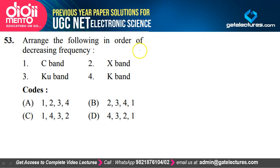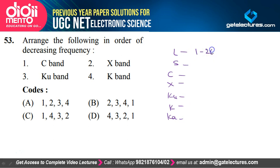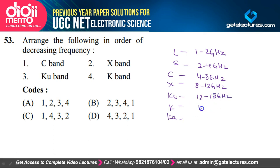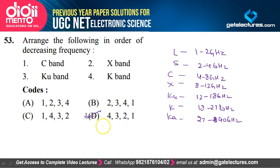Question 53: Frequency bands in decreasing order — L band: 1–2 GHz, S band: 2–4 GHz, C band: 4–8 GHz, X band: 8–12 GHz, KU band: 12–18 GHz, K band: 18–27 GHz, KA band: 27–40 GHz. Arranging C band, X band, KU band, and K band in decreasing frequency order gives: K band first, then KU band, then X band, then C band — option D is correct.